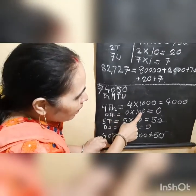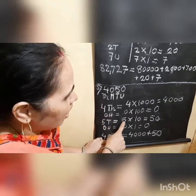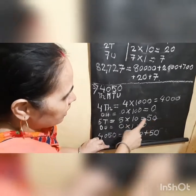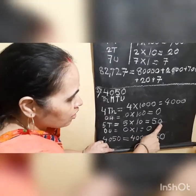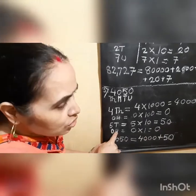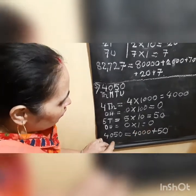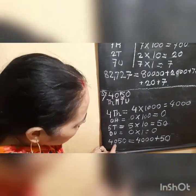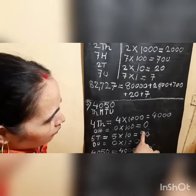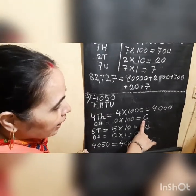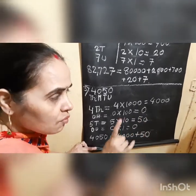Any number multiplied by 0 gives 0. Five is in the tens place: 5 multiplied by 10 equals 50. Zero is in the units place: 0 multiplied by 1 equals 0. Expanded form equals 4,000 plus 50. Whenever we write expanded form, we do not write the zeros. Therefore, 4,000 plus 50.